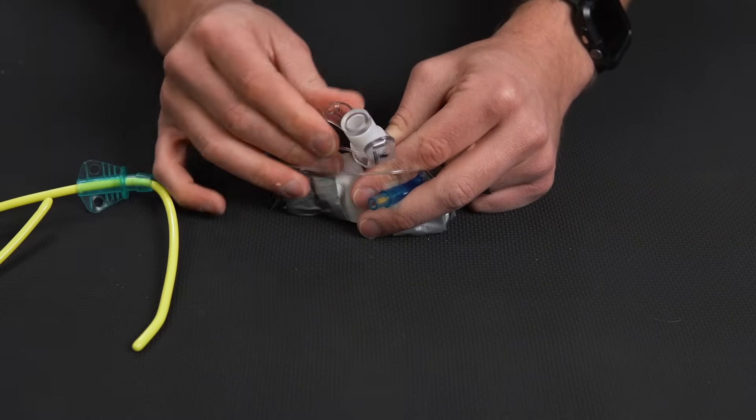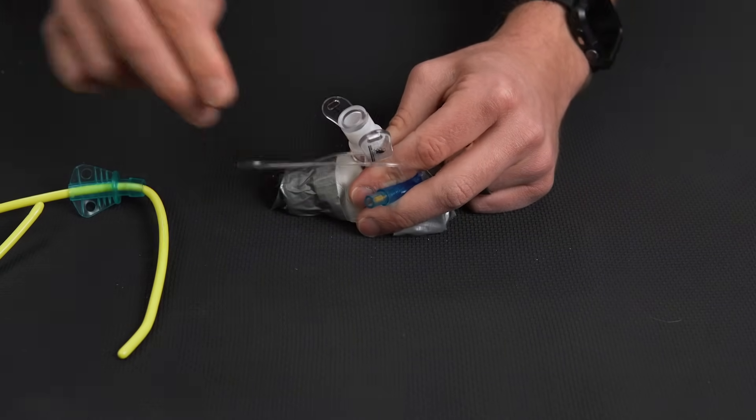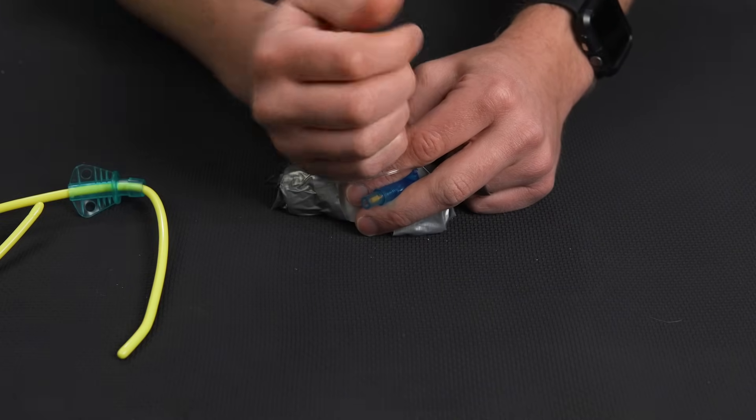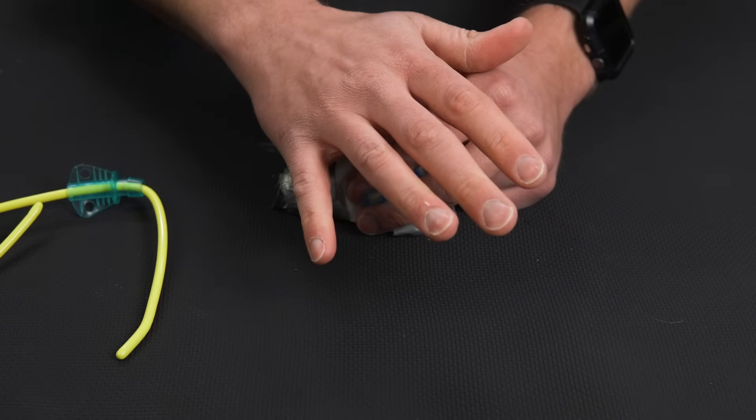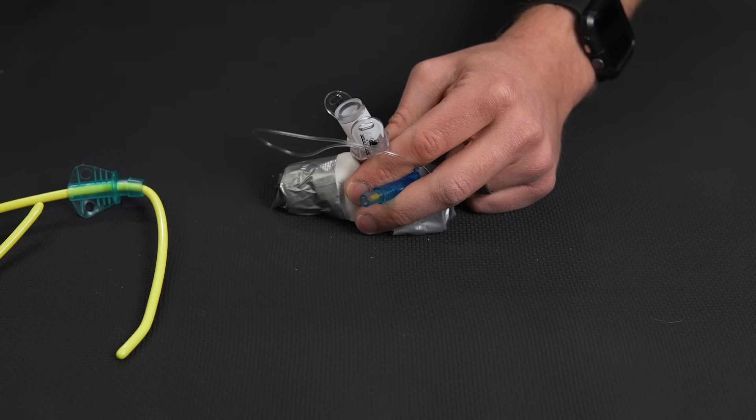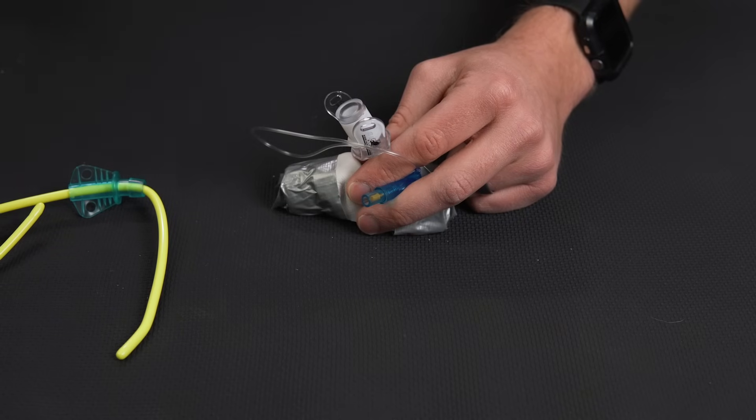Once we have that, we confirm it the exact same way we would an endotracheal tube. We want to put capnography on that. We're going to take a bag valve mask, start ventilating the patient, and we're going to listen to lung sounds and we're going to listen for the absence of epigastric sounds.